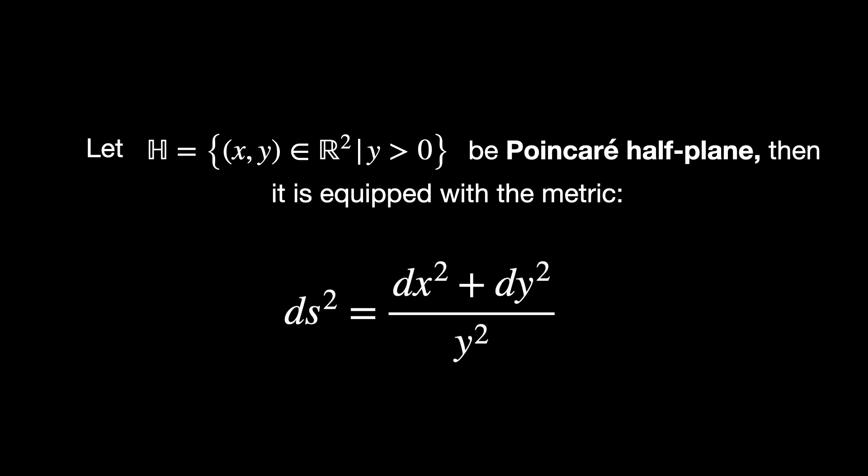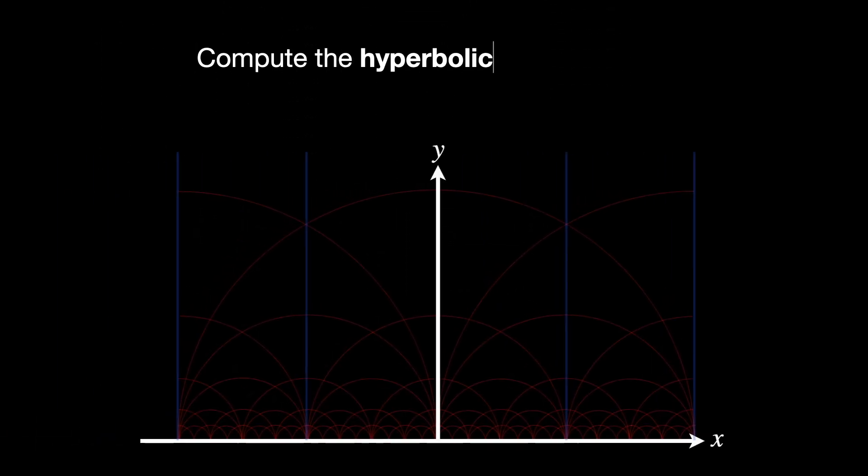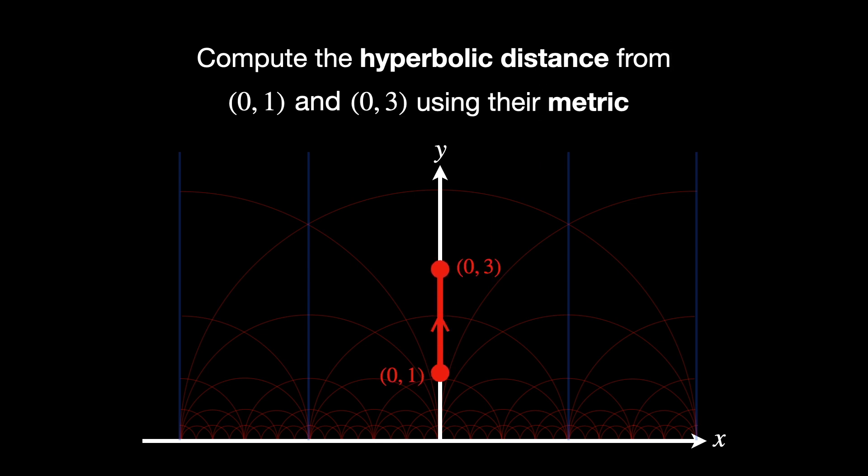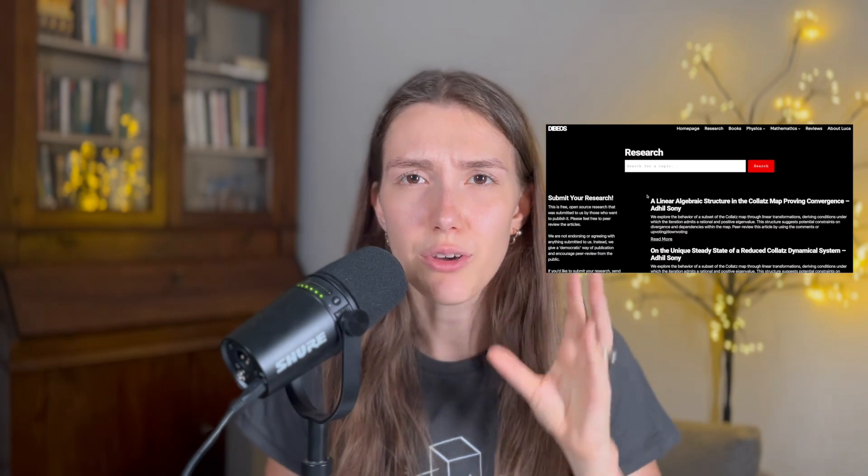To finish the video, we'll propose an exercise. And as usual, we edit its detailed solution in the PDF link in the description. Check it out. Let H be the Poincaré half plane. Then it is equipped with this metric, just as we've seen before. Your task is to compute the hyperbolic distance from points (0,1) and (0,3) using this metric. And I gotta say that this time, the path is gonna be a vertical straight line from the initial to the final point. Don't forget that on our website, we have a section where you can send your own research. More details in the description. If you enjoyed this video, I'm sure you're going to love this one. See you guys there.